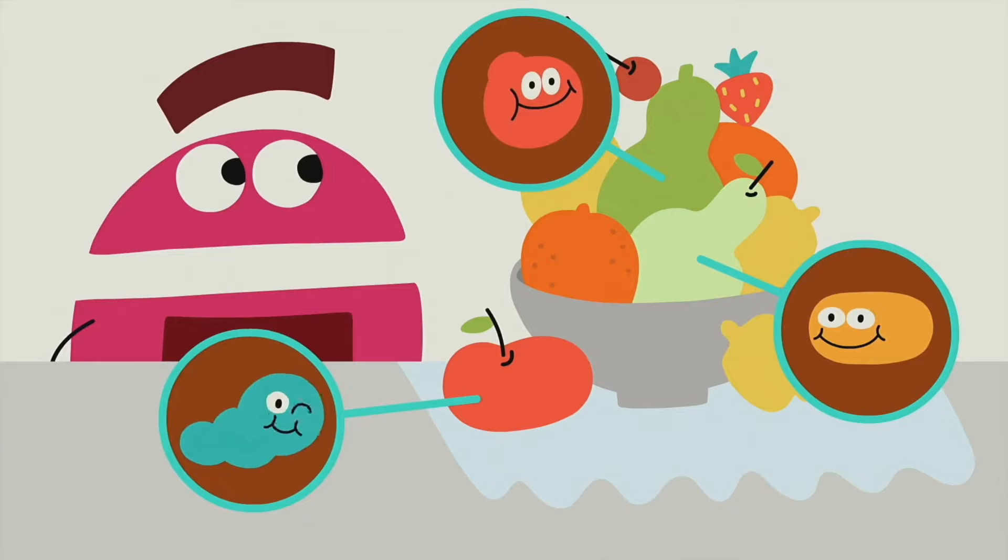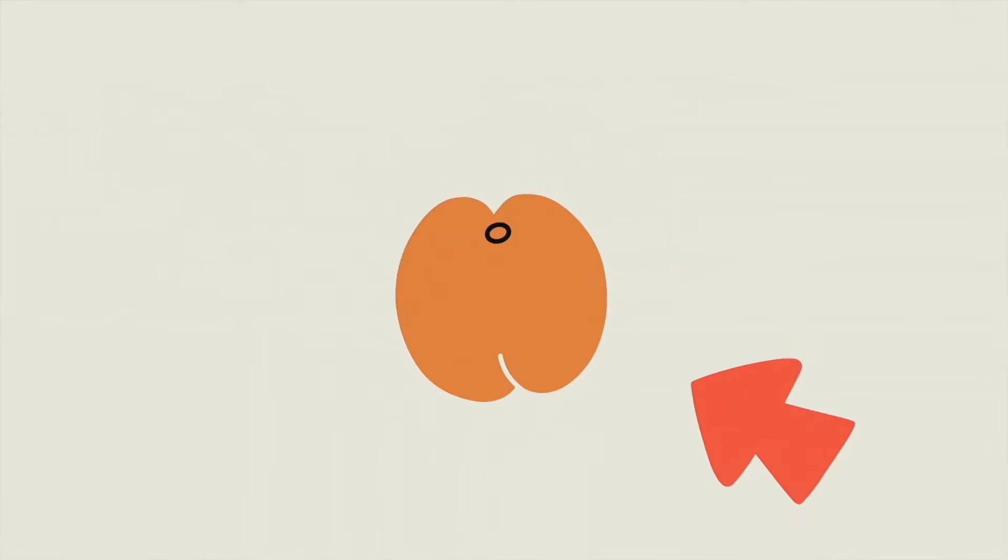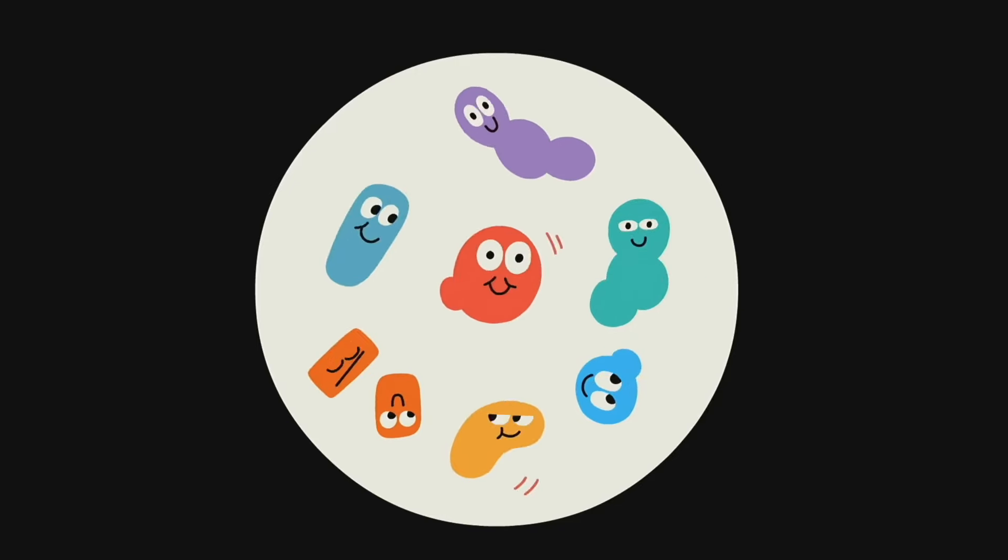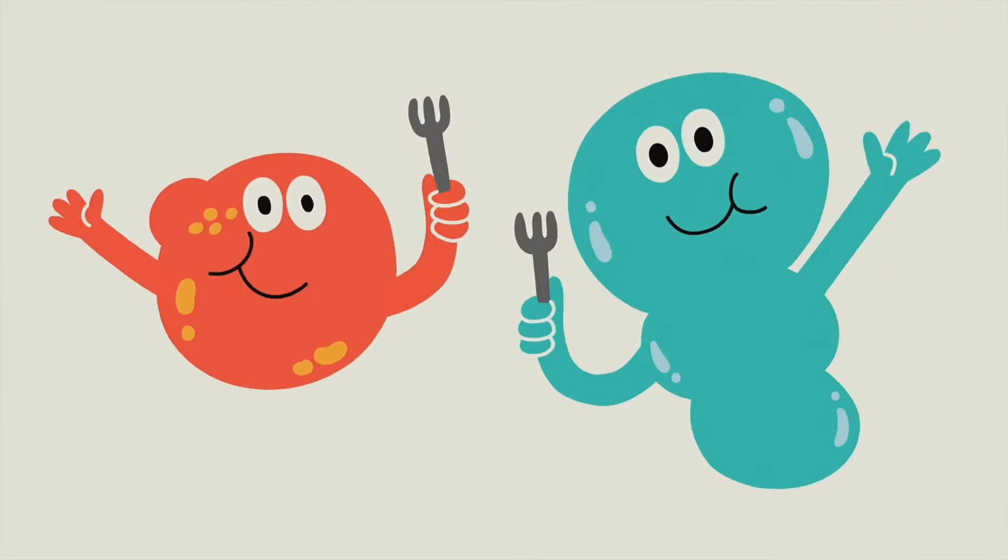There are tiny microorganisms everywhere. On every apple, every apricot, banana and pear. They're bacteria and fungi, too tiny to see. But they've gotta have their dinner just like you and me.